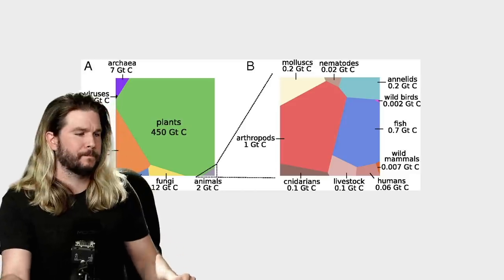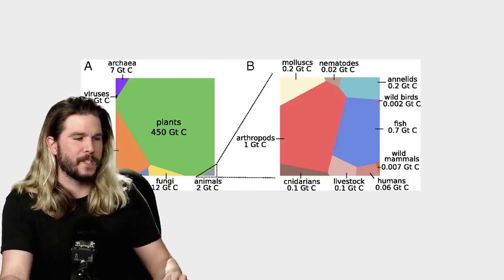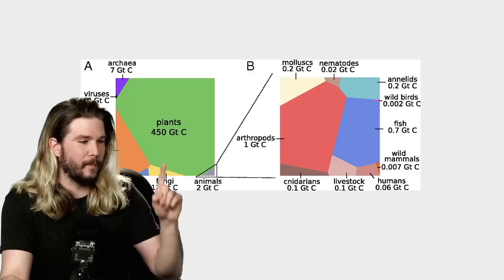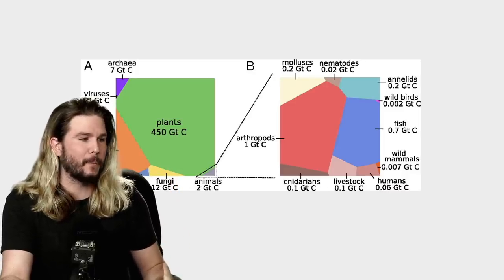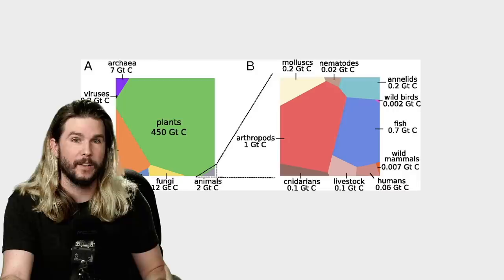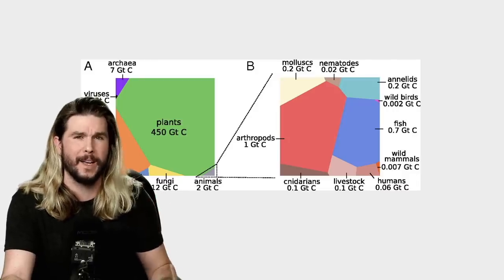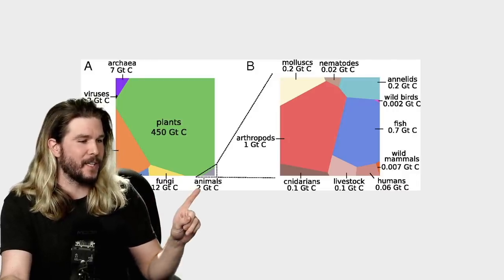So if you're looking at this here, what do we see? Well, we see that obviously plants make up the vast majority of the carbon, of the biomass on Earth. And you can see here all the animals go into this breakout.